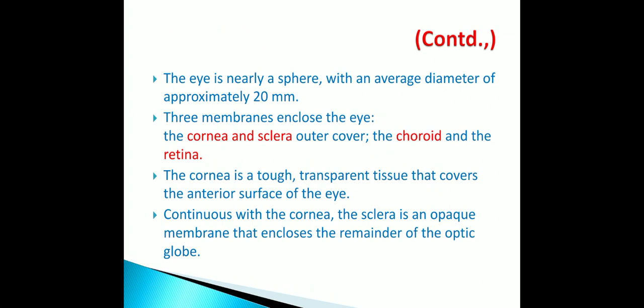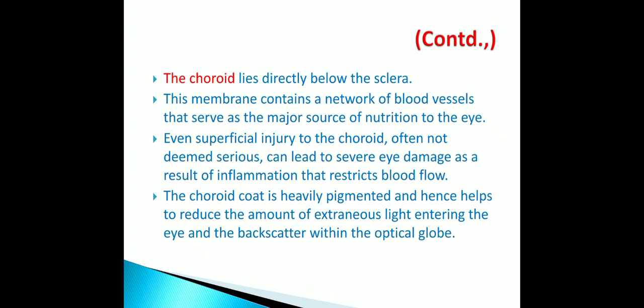Three membranes enclose the eye: the cornea and sclera form the outer cover, along with the choroid and retina. The cornea is a tough and transparent tissue that covers the anterior surface of the eye. The sclera is an opaque membrane that encloses the remainder of the optic globe. The choroid lies directly below the sclera and contains a network of blood vessels that serve as the major source of nutrition to the eye.